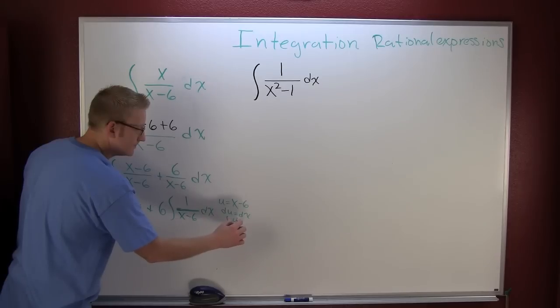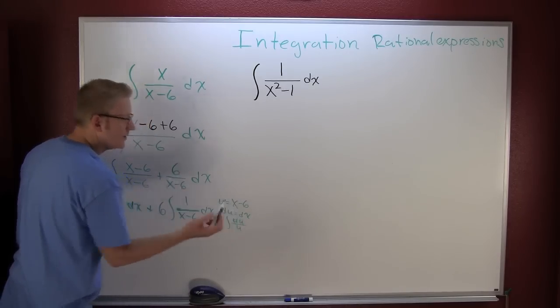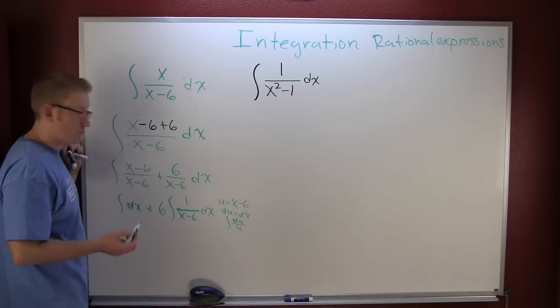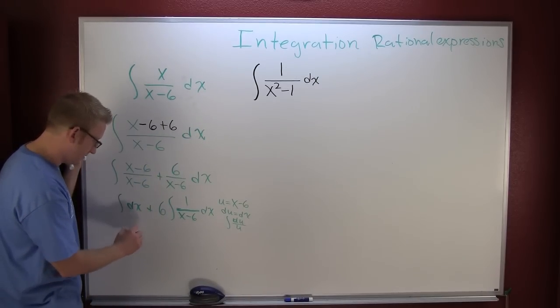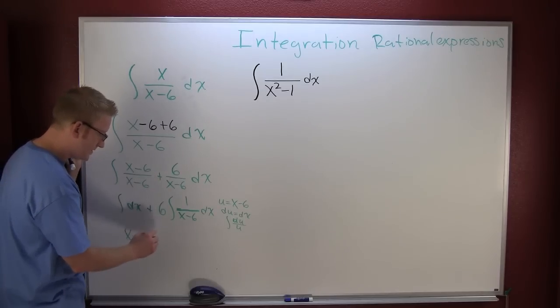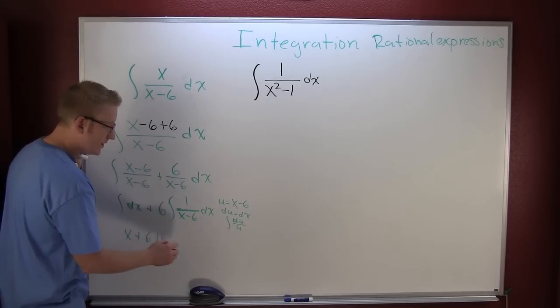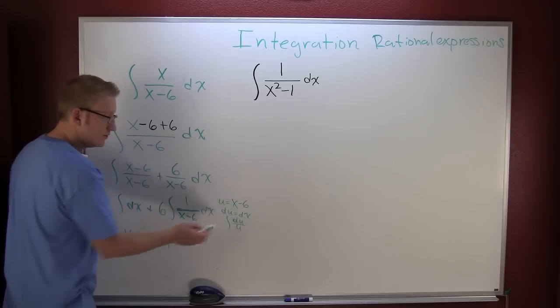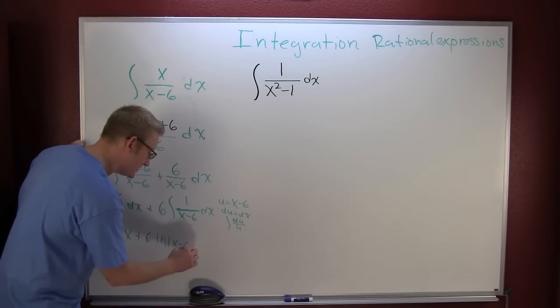So then I have the situation of du over u, which you know integrates to the natural log. So then here this is x plus 6 times the natural log of the absolute value of u. But what was u? It was x minus 6.